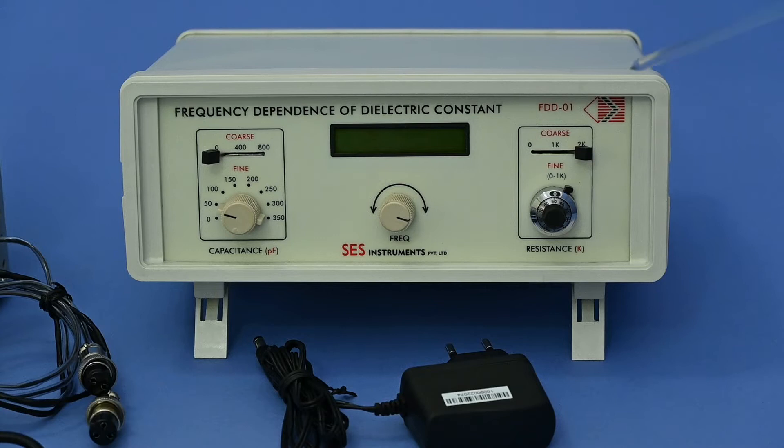Variable resistance is also in two steps, coarse and fine. Coarse in three steps: 0, 1k, and 2k. And fine, it is from 0 to 1 kHz with 10 ohms steps.